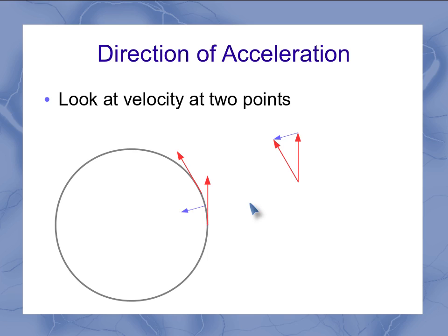Now I can repeat the same procedure for another two velocity points, say up here at the top and slightly further on. Copying those over, looking at the change in velocity, and copying that back shows me that, again, I'm pointing in towards the center of the circle.